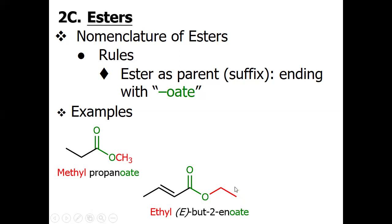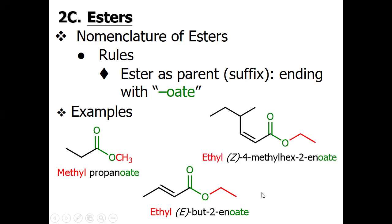In the next ester example, this oxygen is directly attached to a two-carbon alkyl group, so we write ethyl first. The chain contains a double bond with E configuration, because the two groups are on opposite sides of the double bond. The carbon chain on the acid side has four carbons (but-), with a double bond at carbon two (but-2-en-), and the suffix is 'oate.' The full IUPAC name is ethyl (E)-but-2-enoate.